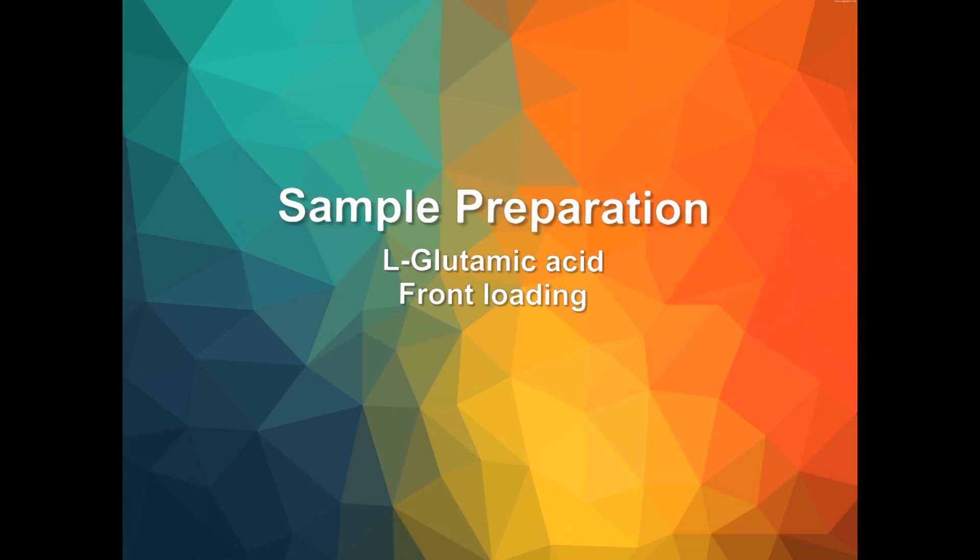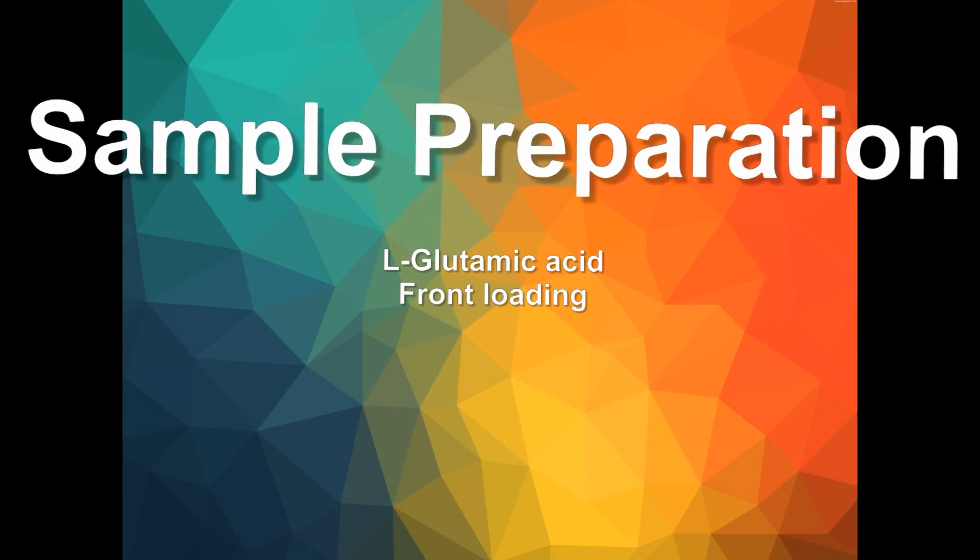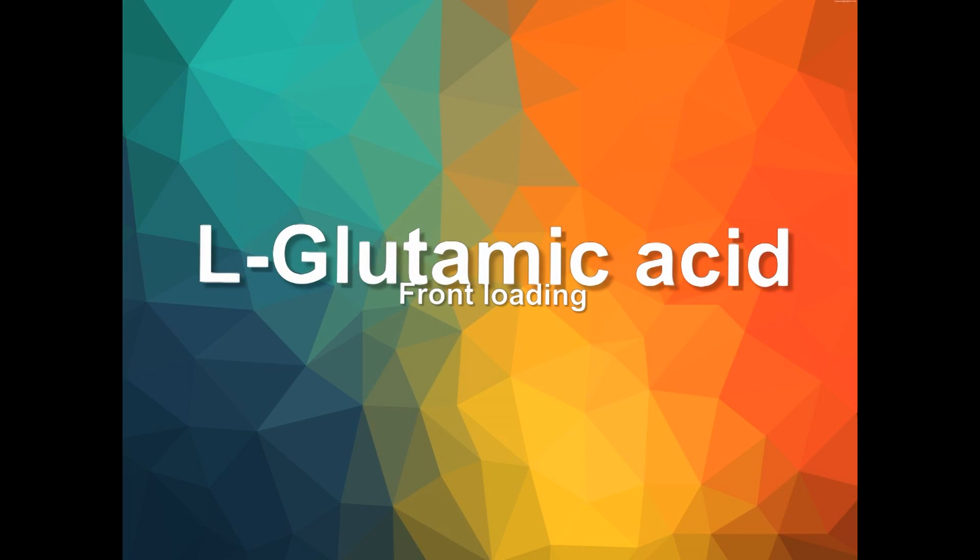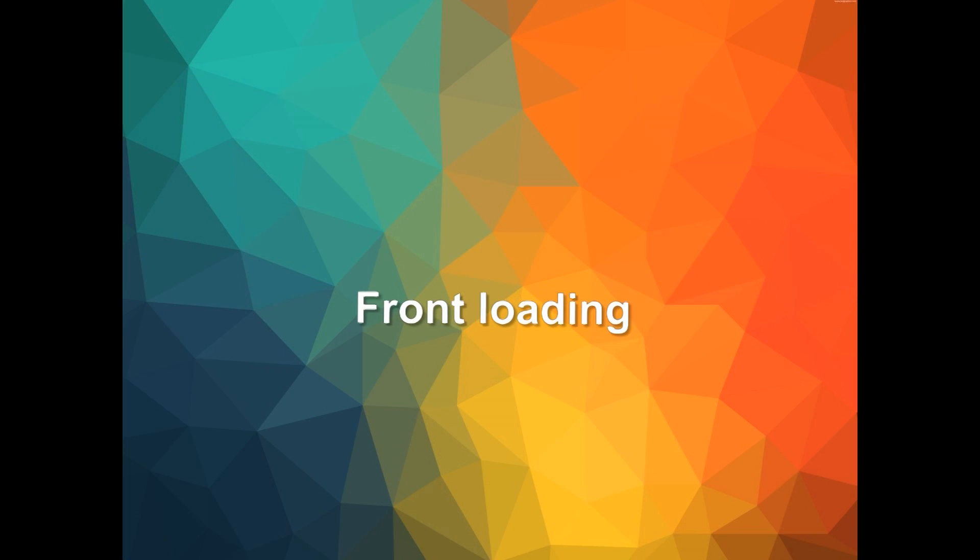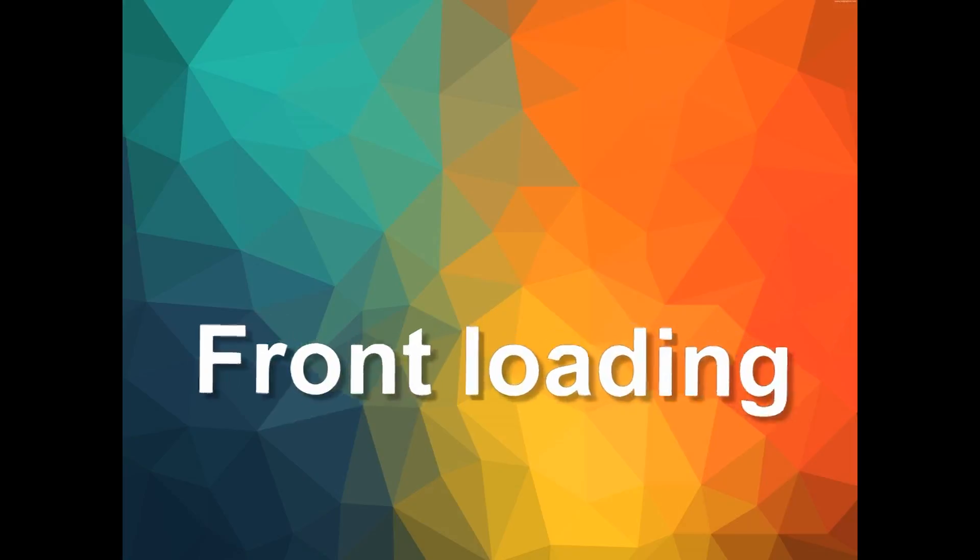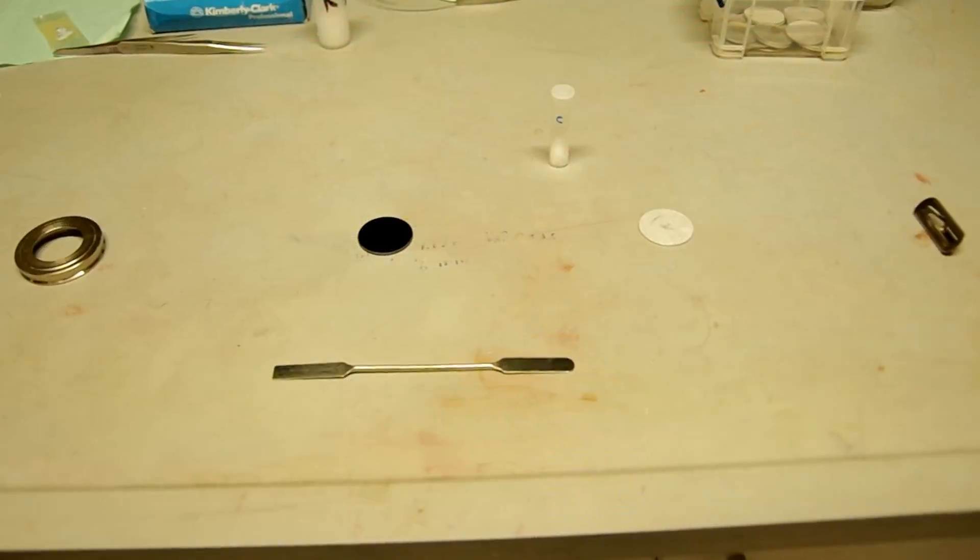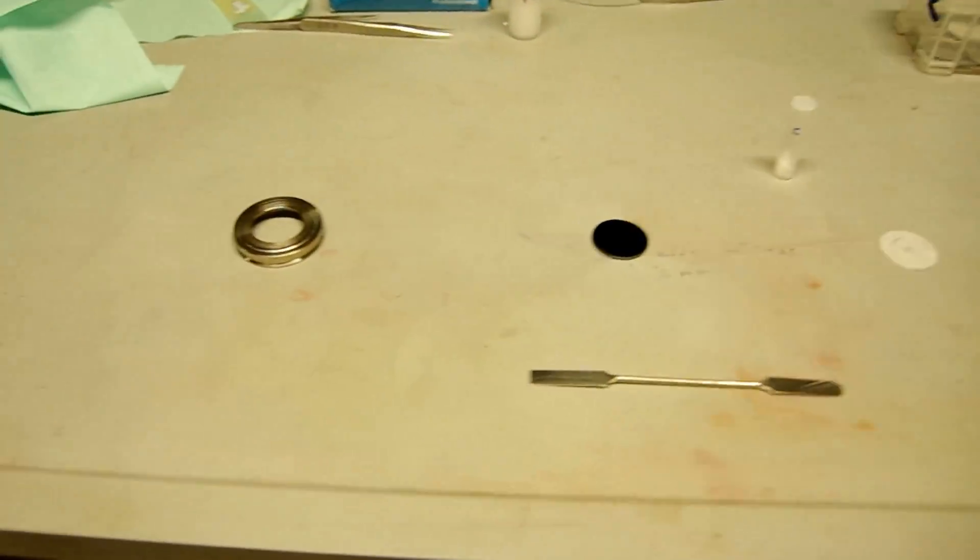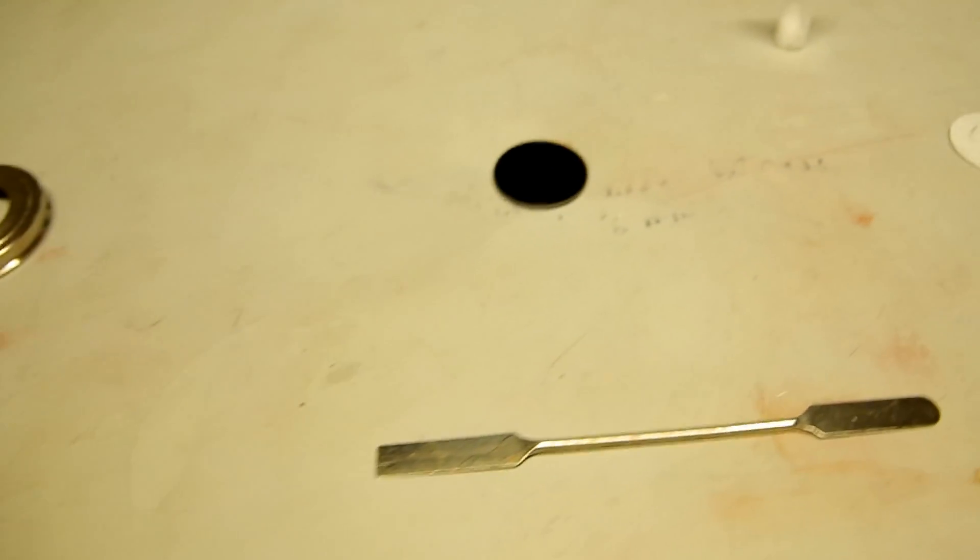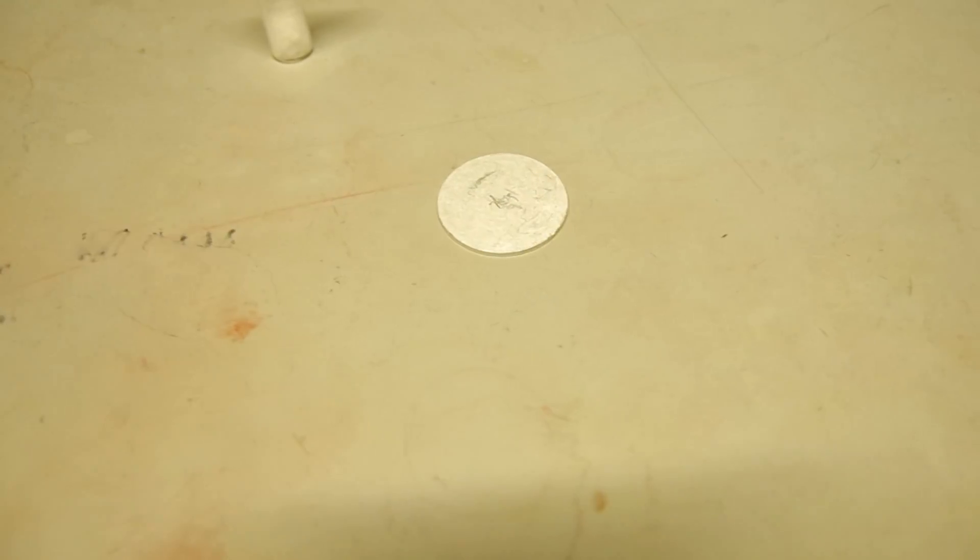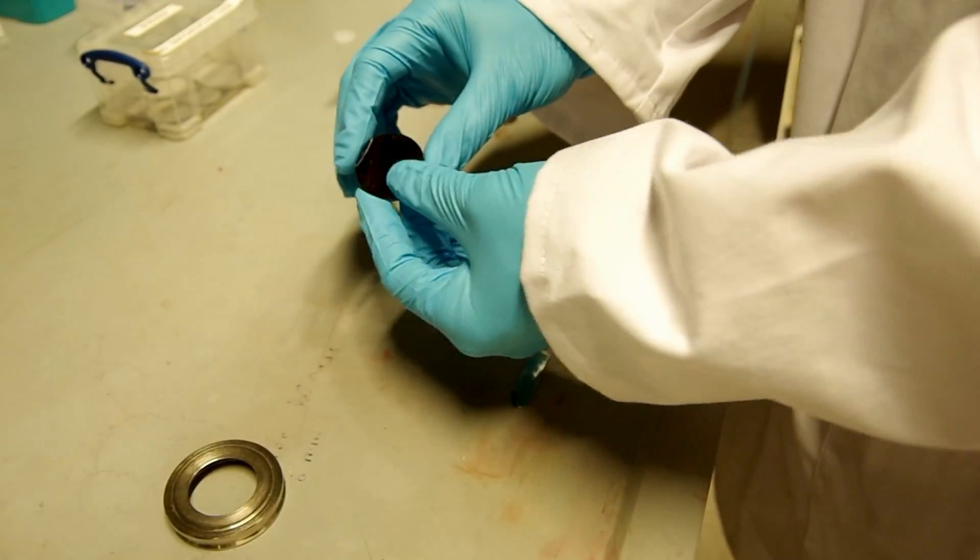Now, let's look at the sample preparation. The sample we use here is L-glutamic acid. The powder is quite fine, so no milling is needed. For front loading powder mount, we need standard sample holder, monocrystalline silicon zero background, a spatula, metal base, and a clip.